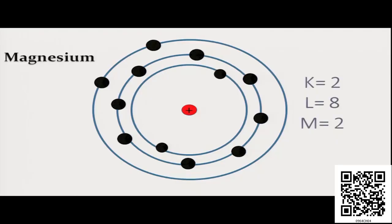Taking another example — magnesium. Magnesium having number of electrons 12 are distributed as 2-8-2 and in the outermost shell it contains two electrons. Here also if you observe, if magnesium can lose two electrons which are present in the outermost M shell, magnesium can achieve the electronic configuration of 2-8. Now as magnesium is capable of donating or losing two electrons, we say the valency of magnesium is 2.